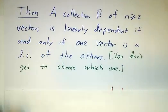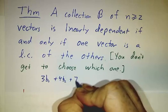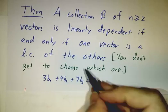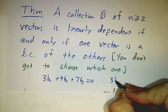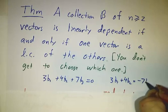So for example, if you had 3b₁ plus 4b₂ plus 7b₃ equals 0, you could put one of these on the other side of the equation. 3b₁ plus 4b₂ equals negative 7b₃.